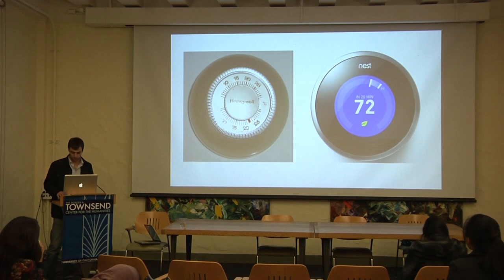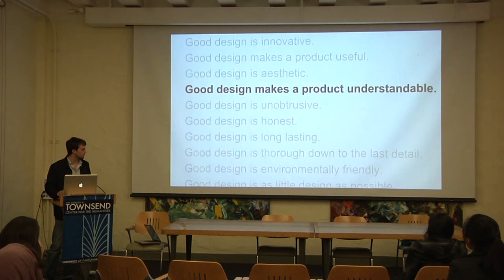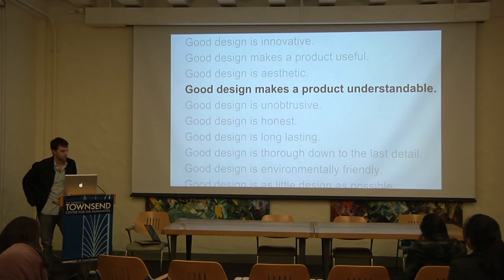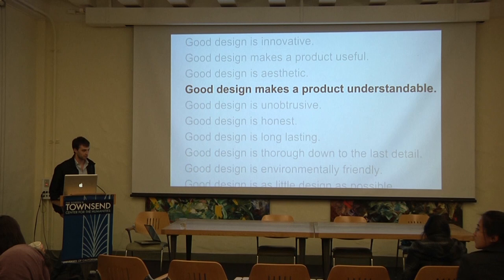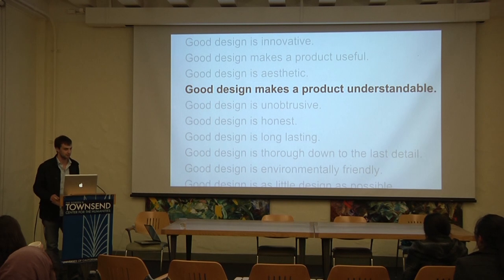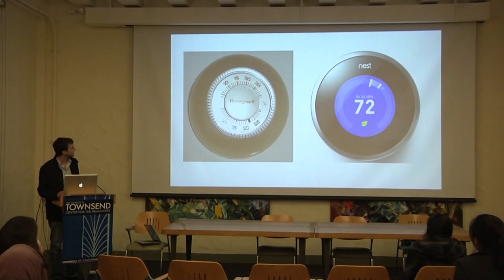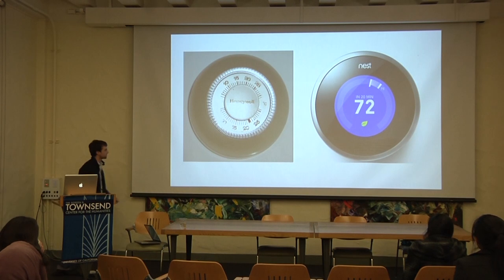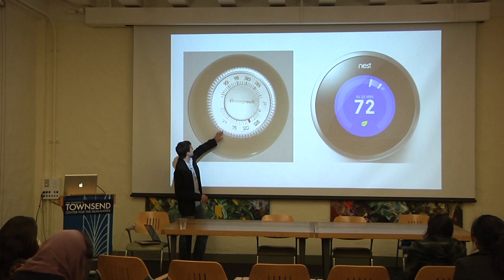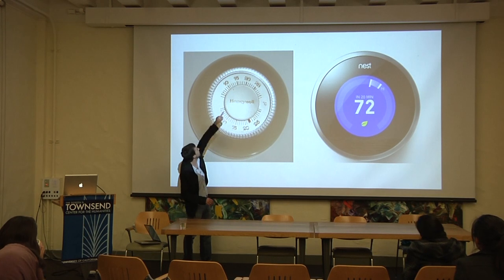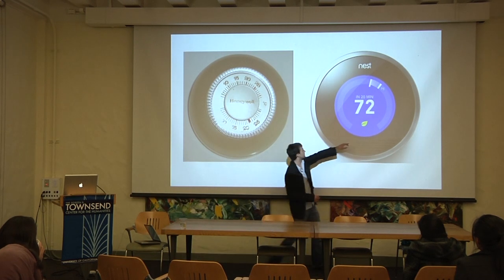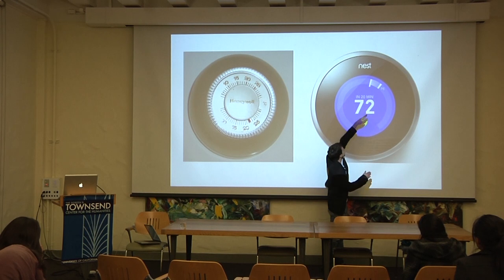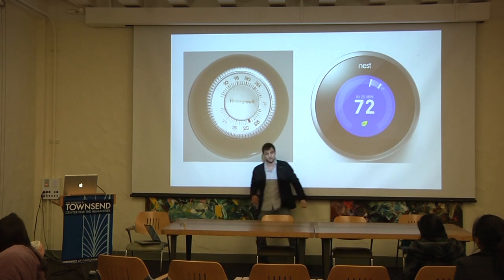One heuristic especially important to cognitive science is 'good design makes a product understandable.' So how do we understand things? That's a question asked in many cognitive science classes. Looking at the traditional thermostat versus the Nest: the old one has the same gauge of numbers on top and bottom and it's unclear what that means, whereas the Nest gives you a very simple gauge that is very clear and understandable for reasons I'll get to in a minute.